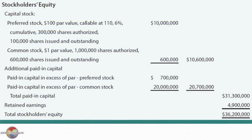Let's assume Mueller Corporation has the following equity structure: preferred stock, $100 par value, callable at $110, 6% cumulative, 300,000 shares authorized, 100,000 shares issued and outstanding. Although the par value is $10 million, the call price is $11 million — 110% of par. So to retire those shares would take $11 million, plus we would also need to pay the dividends.